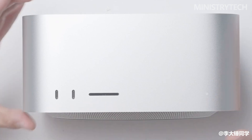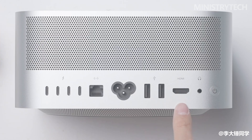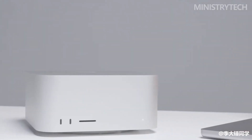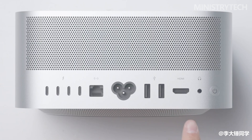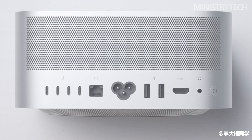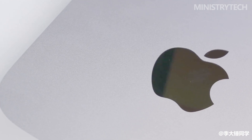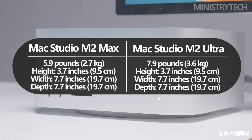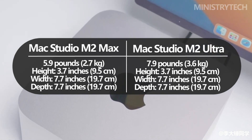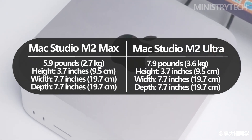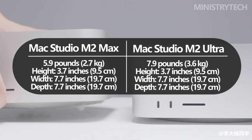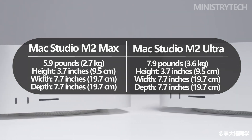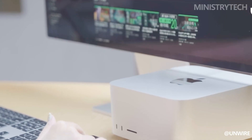The weight of a desktop machine like the Mac Studio may not be a significant concern for most potential buyers. However, for those who anticipate the need to move the machine frequently, it's worth considering the weight differences. The M2 Max weighs approximately 2.7 kilograms, while the M2 Ultra is slightly heavier at around 3.6 kilograms. This could be a factor if you need to transport the machine regularly for work or travel purposes.